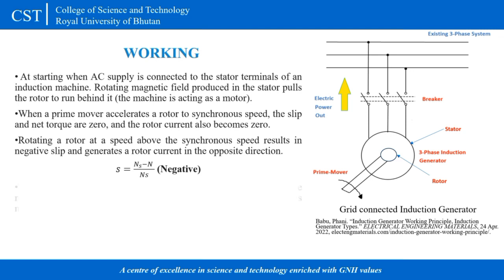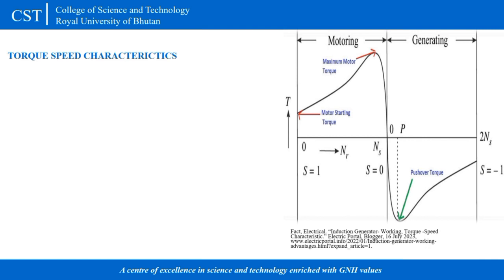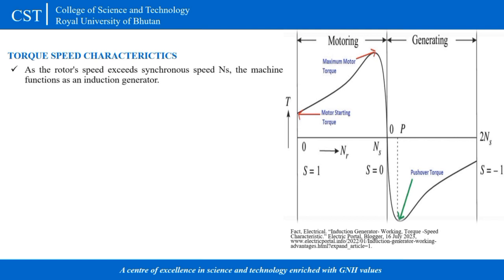The generated rotor current produces a rotating magnetic field in the rotor which pushes onto the stator field. During motoring operation, it draws reactive volt-amperes from the main supply. When the speed of the machine is increased above the synchronous speed using an external prime mover — in the same direction as the rotating magnetic field produced by the stator windings — the machine starts operating as an induction generator and produces a generating torque, which is opposite to the direction of rotor rotation.